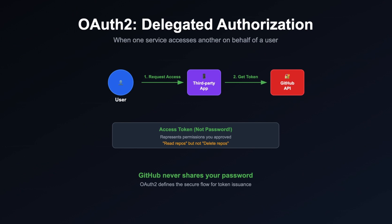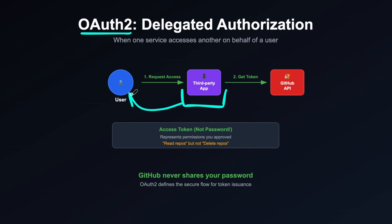Now, how do systems actually enforce those authorizations? This is where OAuth 2 and JWTs or access tokens come into play. OAuth 2 is a delegated authorization protocol used when a service wants to access another service's resources on behalf of a user. For example, if you want a third-party app like Vercel to read your GitHub repositories, instead of giving that app your username and password — which would be insecure — GitHub gives them a token that represents the permissions you approved.